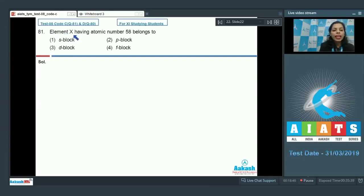Question number 81: Element X having atomic number 58 belongs to... Let's have a look at the electronic configuration of this X. Atomic number 58, so first xenon would be there. Atomic number of xenon is 54, that's why I have just left four electrons. Four electrons are remaining and the configuration becomes 4f1 5d1 6s2. Just recall, this is an f-block element.